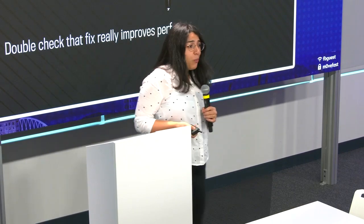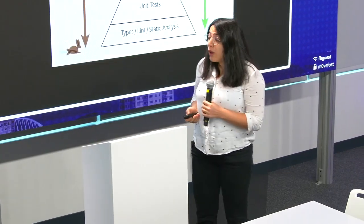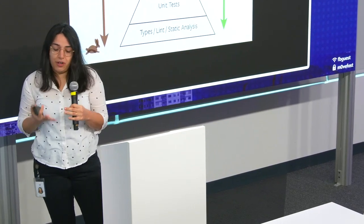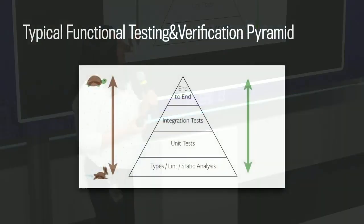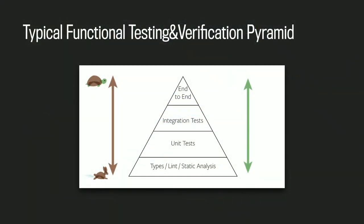So now what is special about performance? When we look at the typical functional verification and testing pyramid, we see that there we have lots of mechanisms. At the bottom you have types, then there are some lints, and you can do static analysis. Then once you have done this, you go up — you have some unit tests, and on top of it, integration tests, and then end-to-end. The higher you go up, the more costly and slower it will be, and you can't run all the tests on a production system.